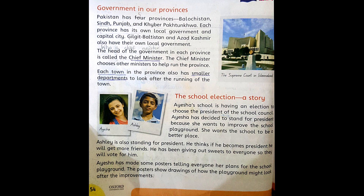Aisha's school is having an election to choose the president of the school council. Aisha has decided to stand for president because she wants to improve the school playground. She wants the school to be a better place.